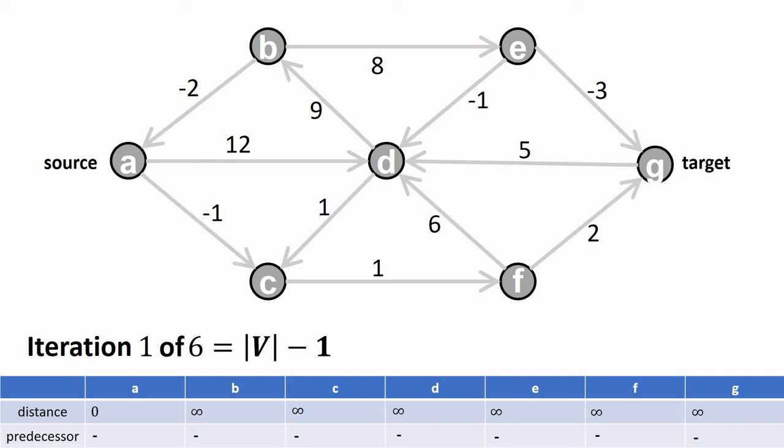We do this at most six times, and after that the algorithm terminates. The values in this table will tell us the shortest paths from A to all other vertices, including vertex G. Let's run the Bellman-Ford algorithm — I believe this will become very clear very quickly.